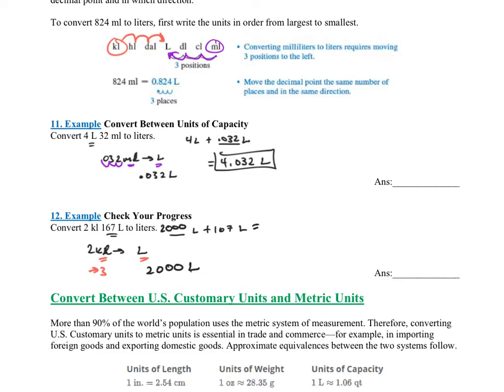So the total that we would have would be 2,000 liters plus 167 liters, which is 2,167 liters.